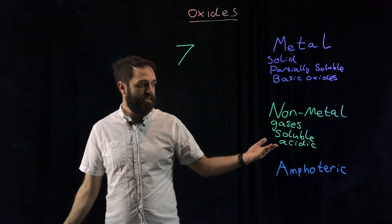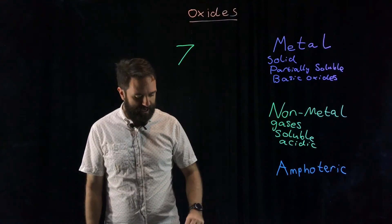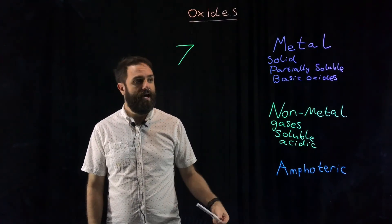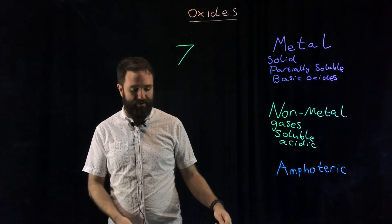There's another classification though. Some examples are aluminum oxide and zinc oxide, and they are what we call amphoteric substances.